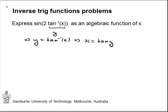I'm going to draw a right angled triangle. Now x is tan y, so x divided by 1 is tan y. Tan is the opposite side divided by the adjacent side, and that leaves the square root of 1 plus x squared for the hypotenuse.